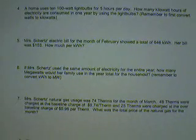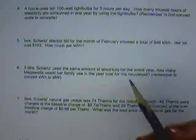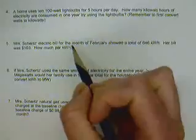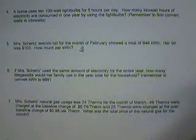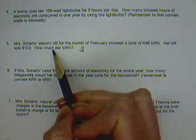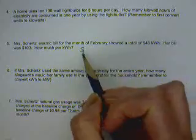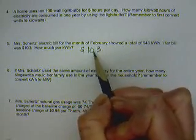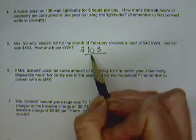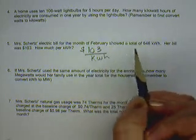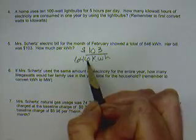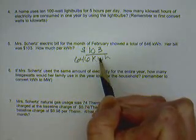Number 5: we're going to take $103 and divide it by 646 kilowatt hours. How did I know to do that? Because it asks how much money per kilowatt hour. So we take money — per means you put a line and kilowatt hour goes underneath it — and we know we have 646. So money per kilowatt hour.